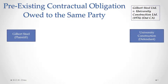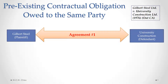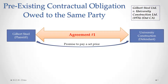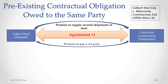In that case, we have two agreements, and they both involve the same parties. One party, the first party, which is the plaintiff, is Gilbert Steel, and the second party is University Construction. Gilbert Steel was a supplier of steel for construction, and University Construction was the general contractor. Agreement number one between these two parties involved a promise by University Construction to pay a set price for the supply of steel by Gilbert Steel.